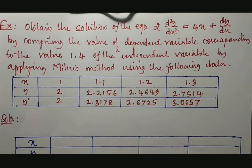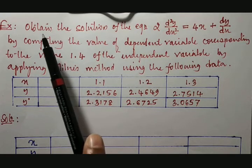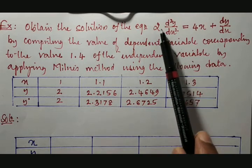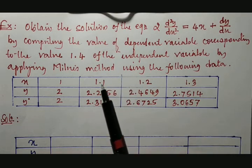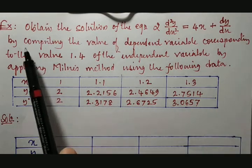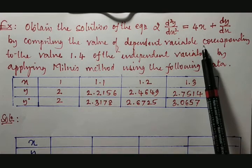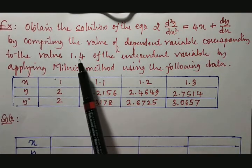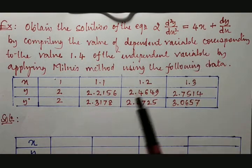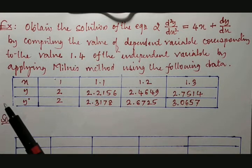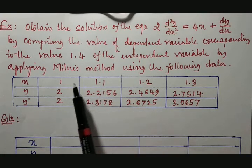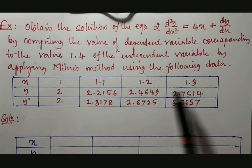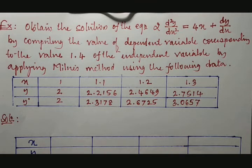The representation of the example is something different. Obtain the solution of the equation d²y/dx² = (4x + 2y) / (dy/dx), computing the value at x = 1.4 by applying Milne's method using the given data. Four sets of predetermined values of x, y, and y' are given.